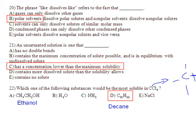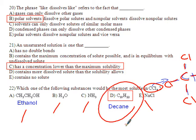Number 22, you would need to figure out what CHCl4 looks like. That's carbon tetrachloride. It has four chlorines around it. That is non-polar. And then you'd have to work through each of these substances and figure out which one is also non-polar. And that would be decane. It's the only one non-polar.